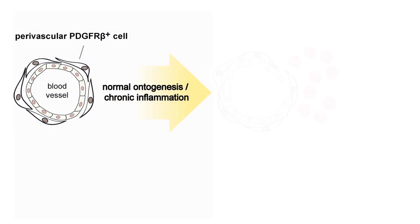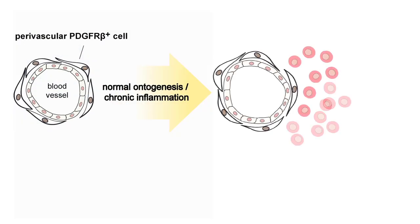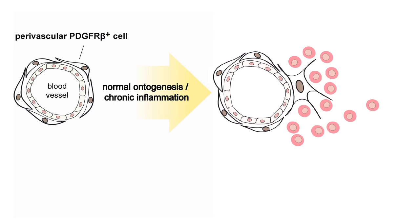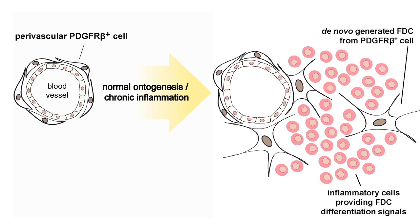All the available evidence argues against follicular dendritic cells being blood-borne. So we are left with a second possibility: that follicular dendritic cells may actually be stromal, sessile, immobile cells. But if that were the case, they must derive from ubiquitous precursors, because follicular dendritic cells can arise everywhere in the body.